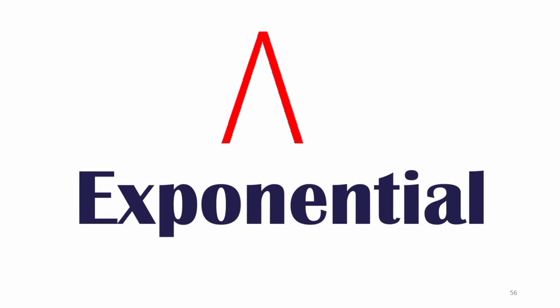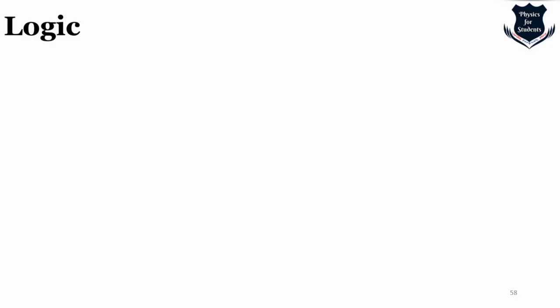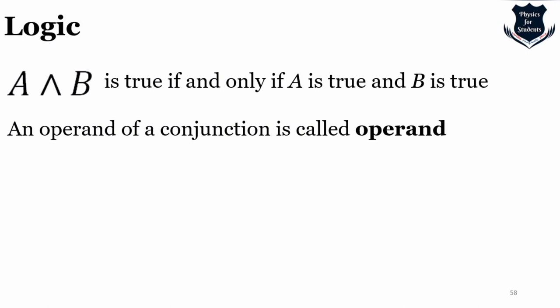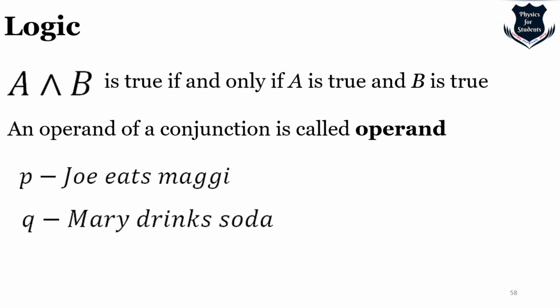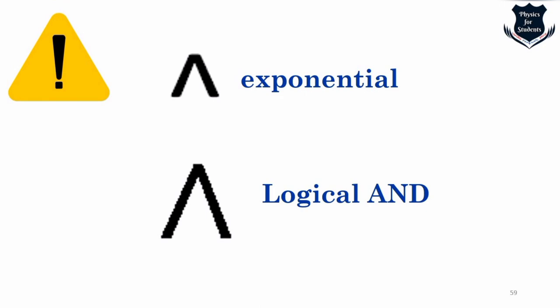Coming to the last part: in mathematics, exponential notation gives a × a × a × ... × a (n times) = aⁿ, denoted a². In logic, the symbol ∧ (logical AND) means a conjunction: 'p AND q' is true if and only if both p and q are true. An important point of attention: the exponential caret (^) and the logical AND (∧) are not the same sign — just as the dot product and the composite function symbol are not the same. The exponential is smaller; the logical AND symbol is larger.